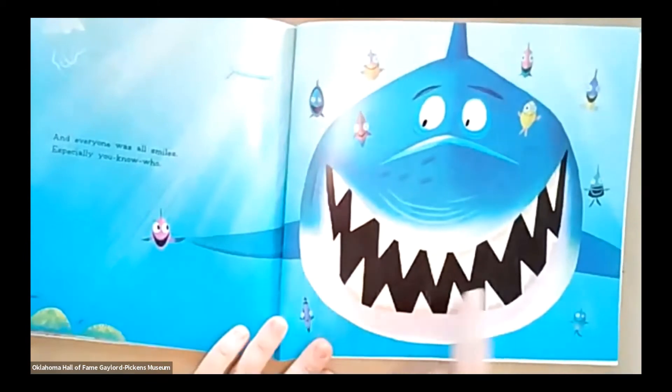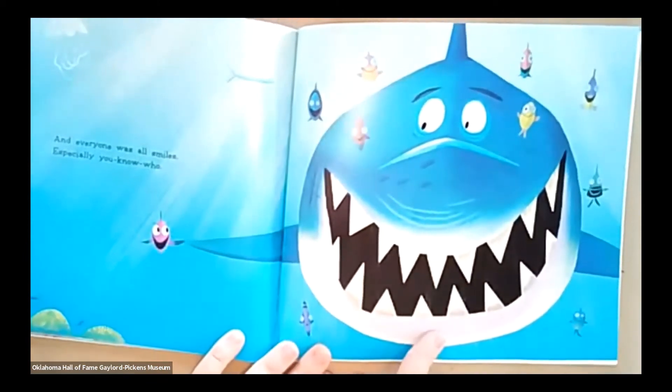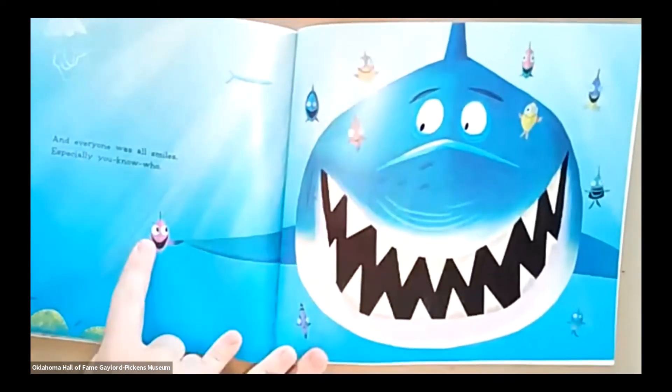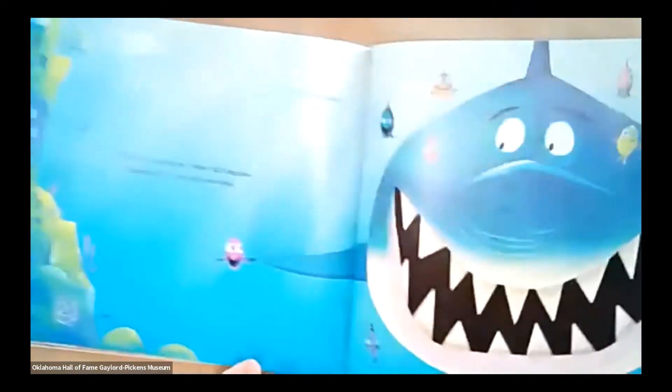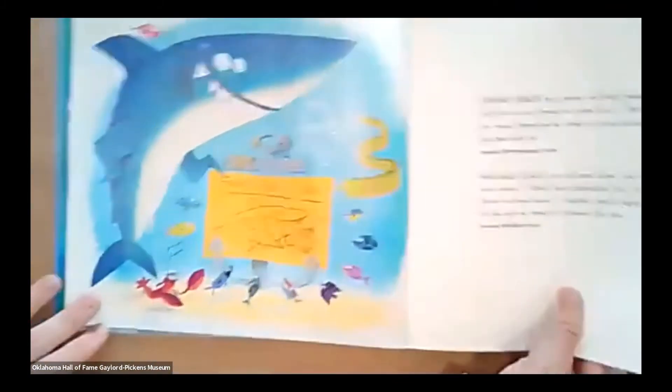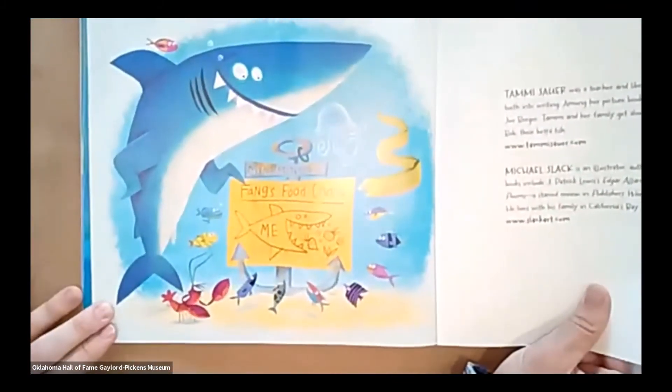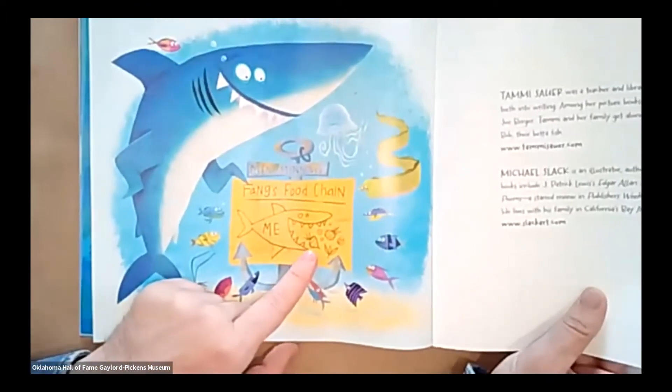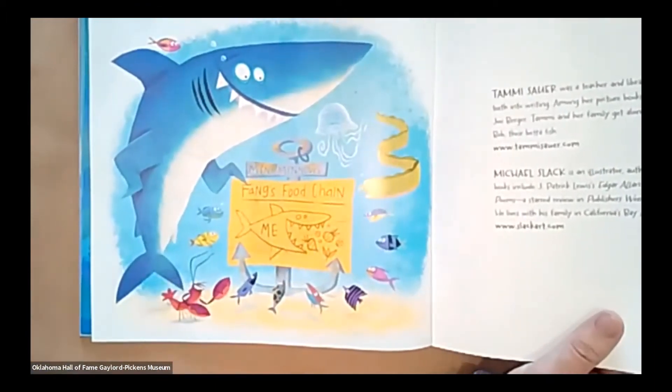So look at Fang. He's got his big, bright smile on. You can see all of his teeth. Everybody else is smiling, leave a nugget. And you see they've changed the sign for Fang. He's a vegetarian shark eating his vegetables. Awesome. So that was our awesome story about Fang and Nugget.